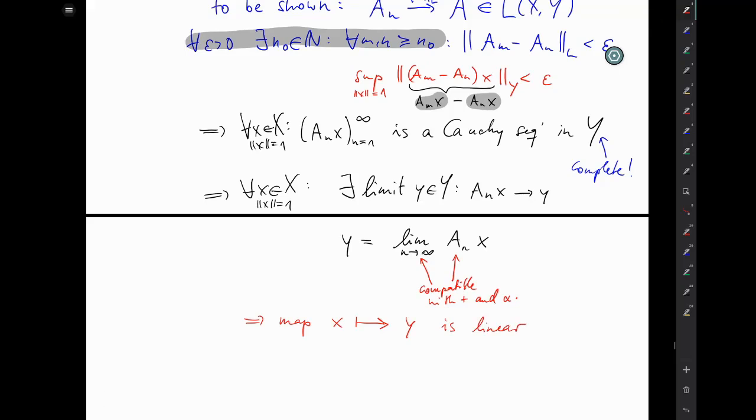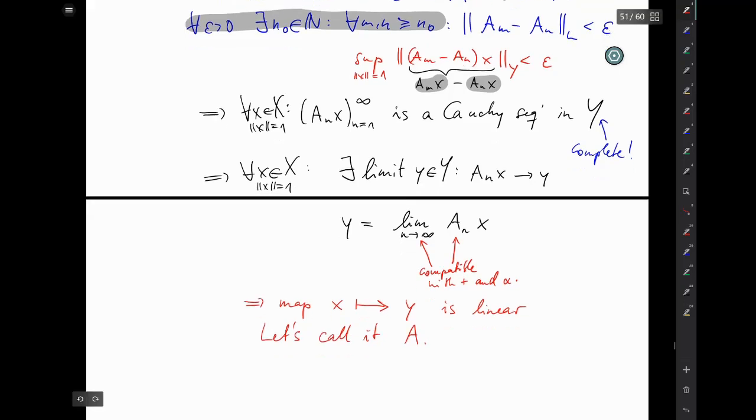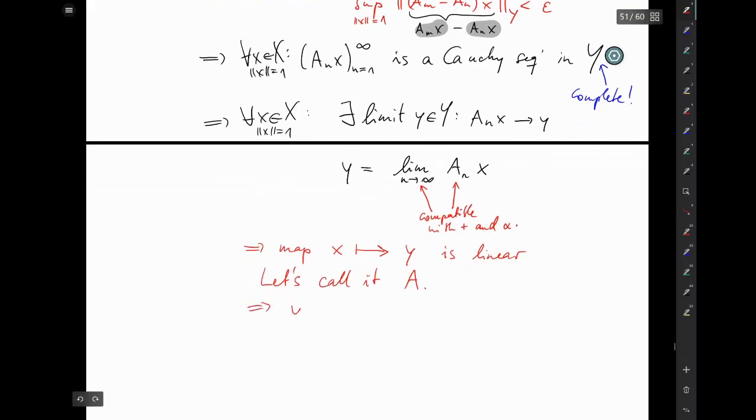It's a linear map from capital X to capital Y. Let's just name it capital A. So instead of y, you can just write A(x). That's why we can write that the norm of A_N(X) minus A(X), which is the Y norm, goes to zero as N goes to infinity, because this is just y.